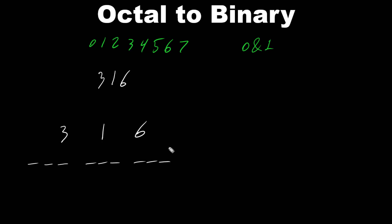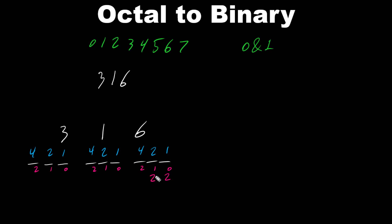We assign decimal values 1, 2, 4 to each group of 3 bits. You might ask why 1, 2, 4 — because the bit positions are 0, 1, 2 and the base is 2, so 2 to the power of the bit position gives us the decimal value. That's why we see 1, 2, 4 repeating — it's base 2 to the power of the bit position.